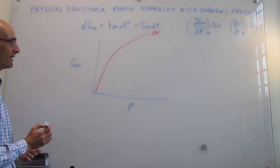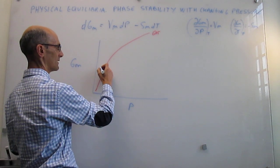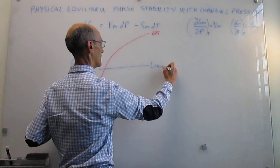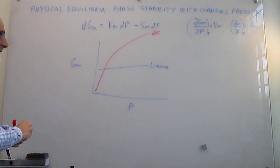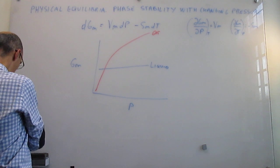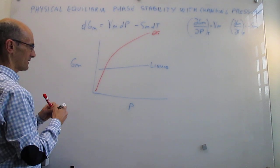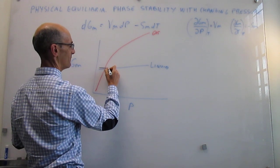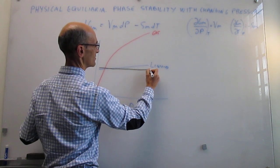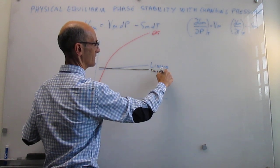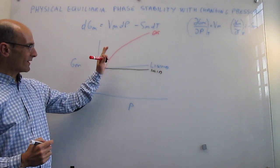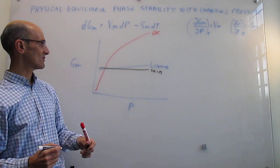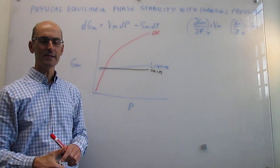We now add the liquid and solid lines to the graph. The liquid line also has a positive slope but much smaller than the gas. The solid line, drawn in black, also has a positive slope that is generally a little smaller than that of the liquid. So all three lines have positive slopes, with the slopes at each point equal to their respective molar volumes — the gas being much larger.